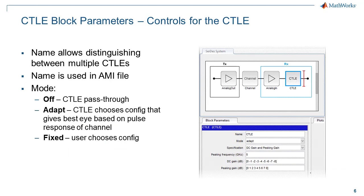If you are using the CERTES Designer app, the configuration parameters are accessed by selecting a CTLE block in the floor plan area. The parameters are the name, which makes it easier to match the model with silicon, especially if you are using multiple CTLE blocks to model a multi-stage CTLE. And the mode — there are three modes: Off, where the CTLE is disabled and is a pass-through; Adapt, where the CTLE selects the configuration that gives the best eye from the pulse response passed to the model during statistical analysis; and Fixed, where the user specifies the configuration to use.